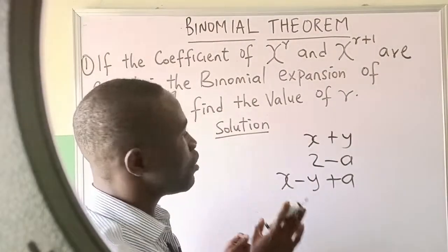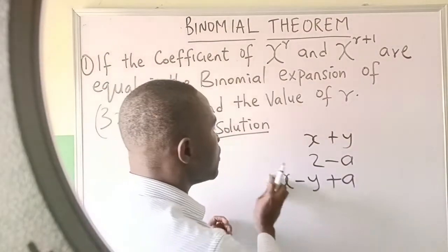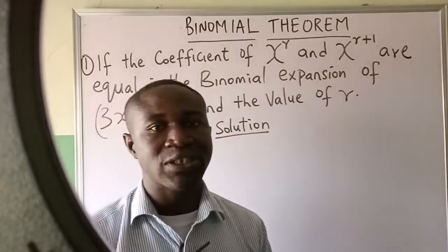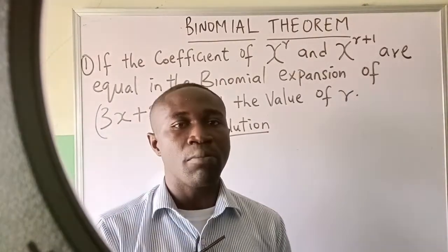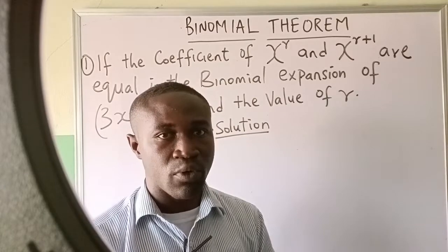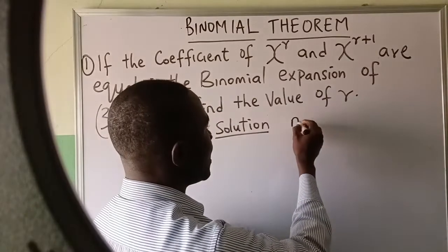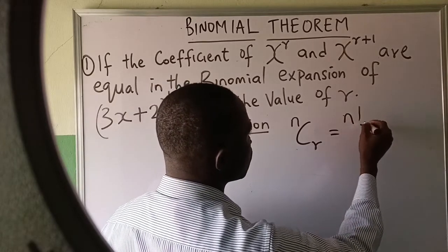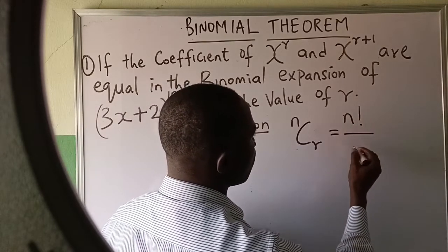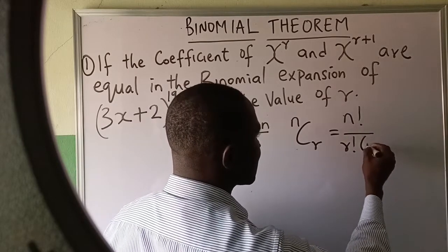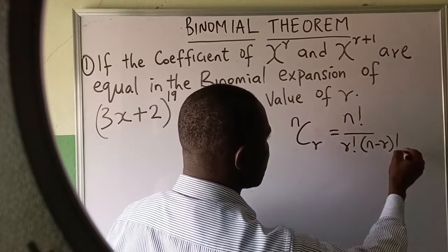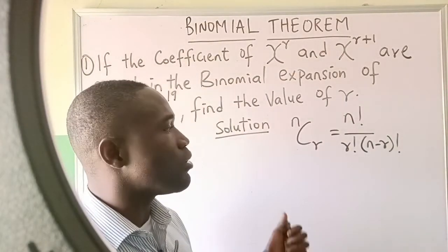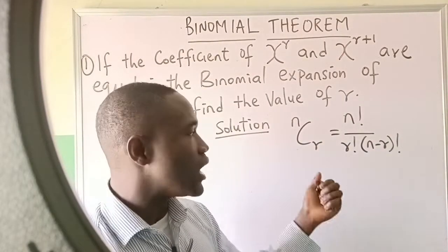In this question, we want to concentrate on binomial. In solving problems on binomial, two principles can be used. The first is the combinatorial coefficient principle, which states that n combination r equals n factorial over r factorial times bracket n minus r factorial.